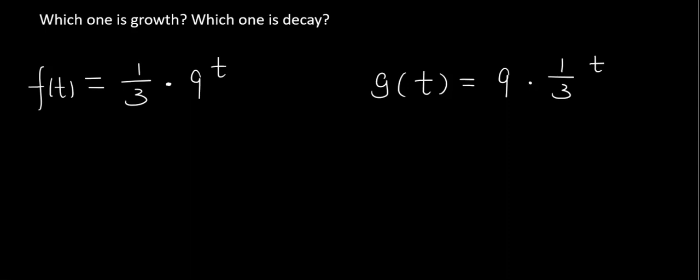We have two functions here. They have different names, just like us have different names. The first one is f of t. The next one is g of t.